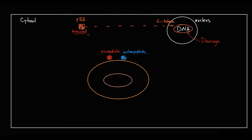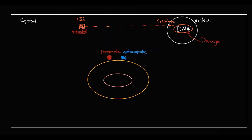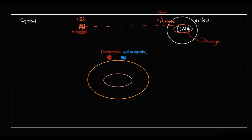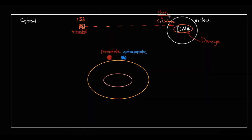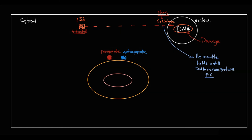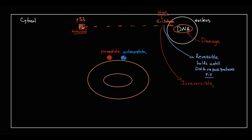With activation, p53 moves to the nucleus, where it stops the cell cycle between G1 and S phase and analyzes the state of the DNA molecule. If the damage is reversible, it holds the cell at that checkpoint until DNA repair proteins fix the damage. But if DNA damage is irreversible, it initiates apoptosis. In this case, p53 increases transcription of pro-apoptotic proteins and decreases transcription of anti-apoptotic proteins.